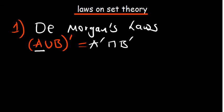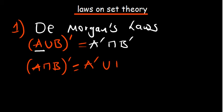The second De Morgan's law is basically the opposite: where you have (A intersection B) complement, this becomes A complement union B complement. So these two statements together are referred to as De Morgan's laws.